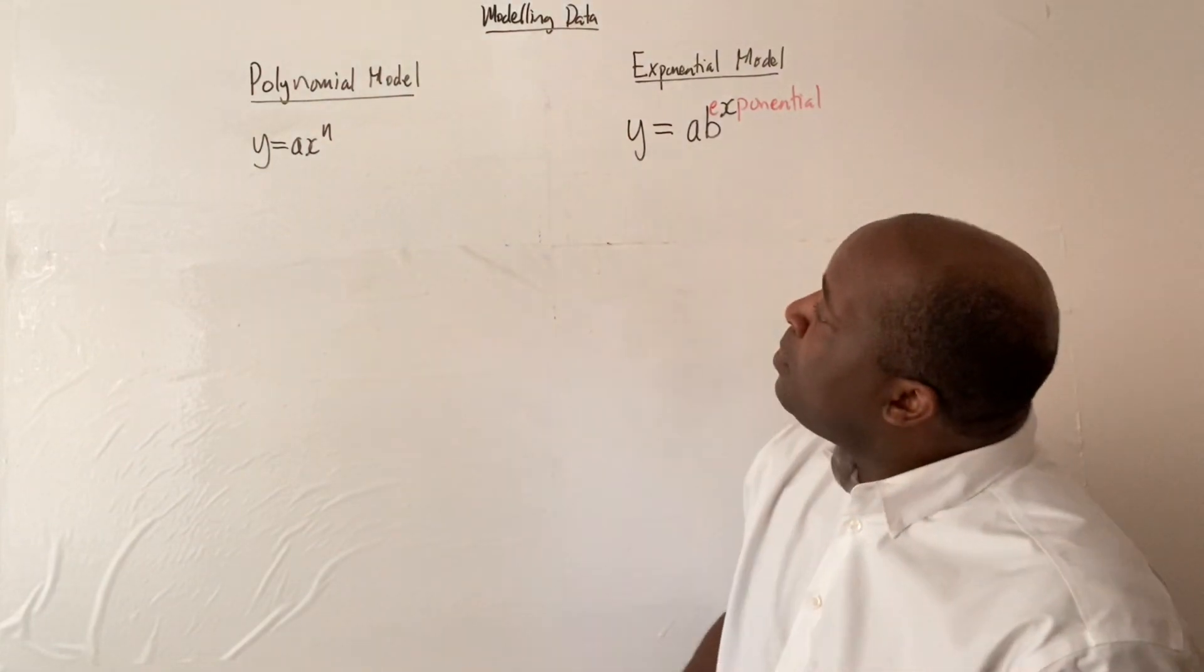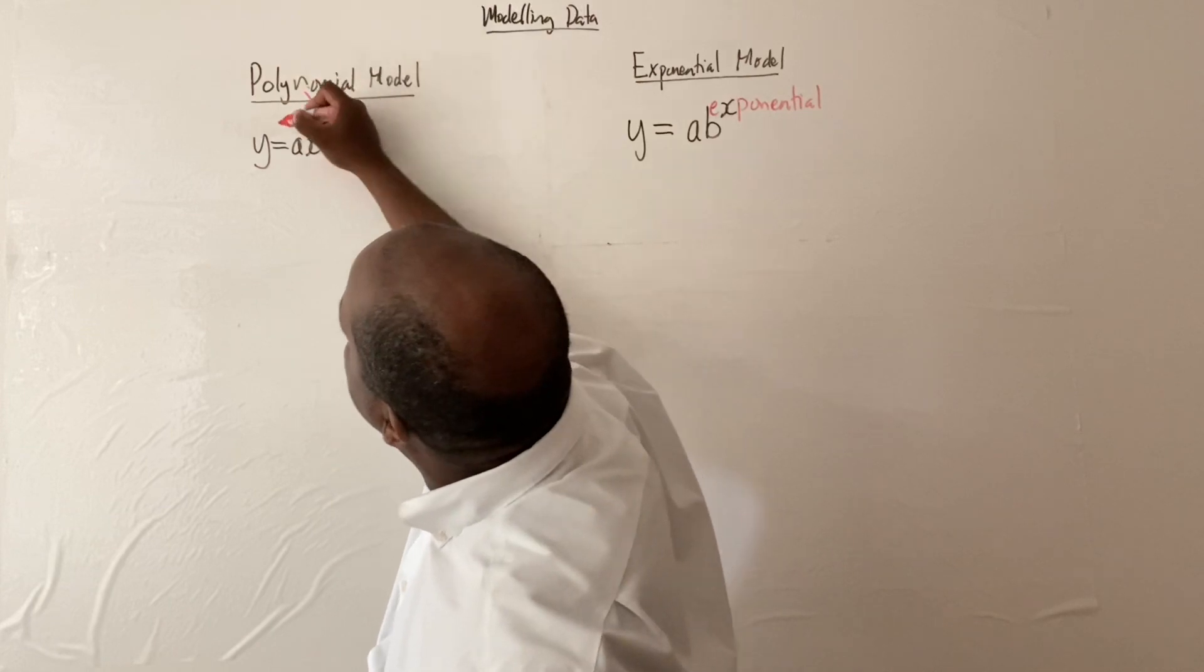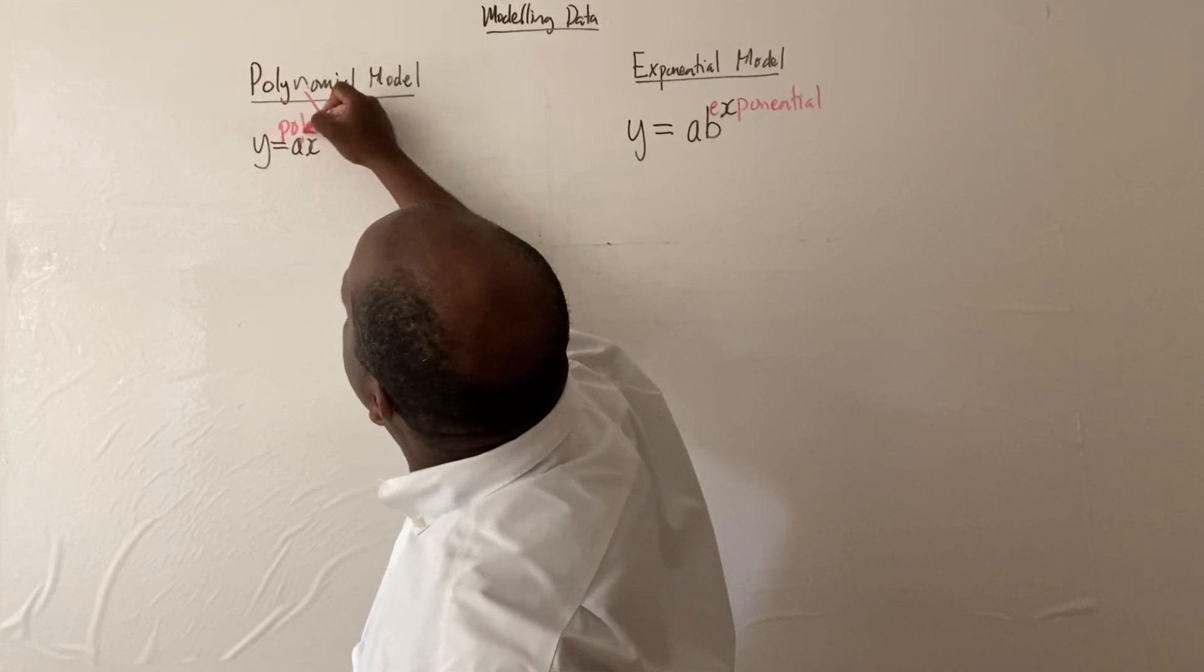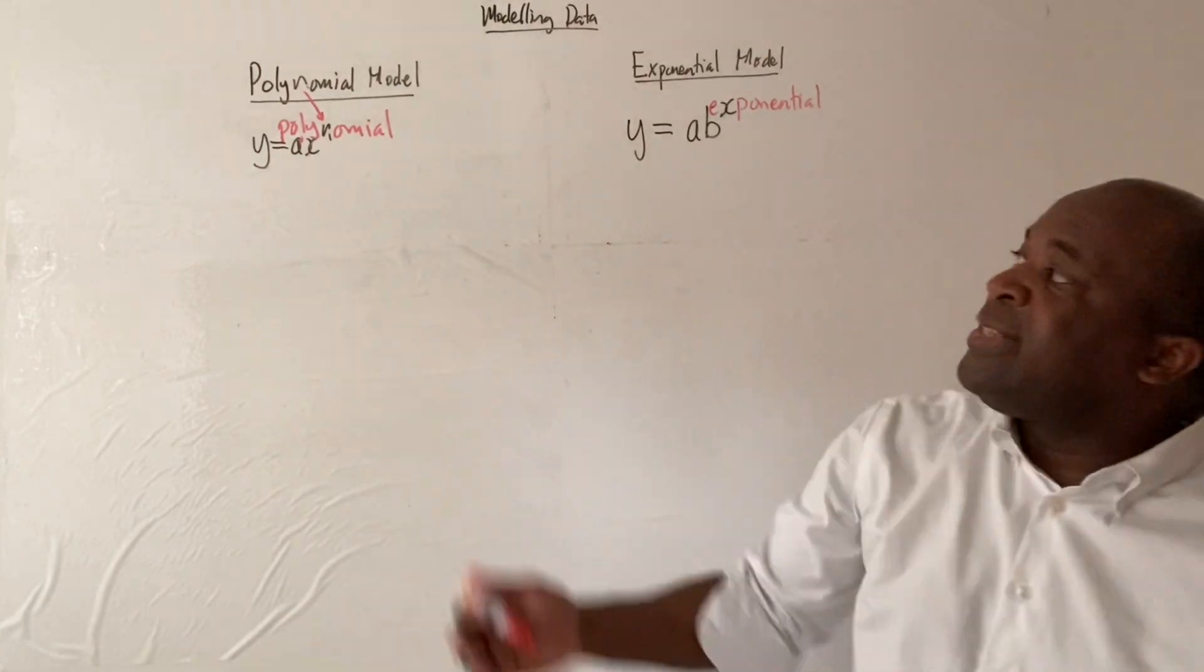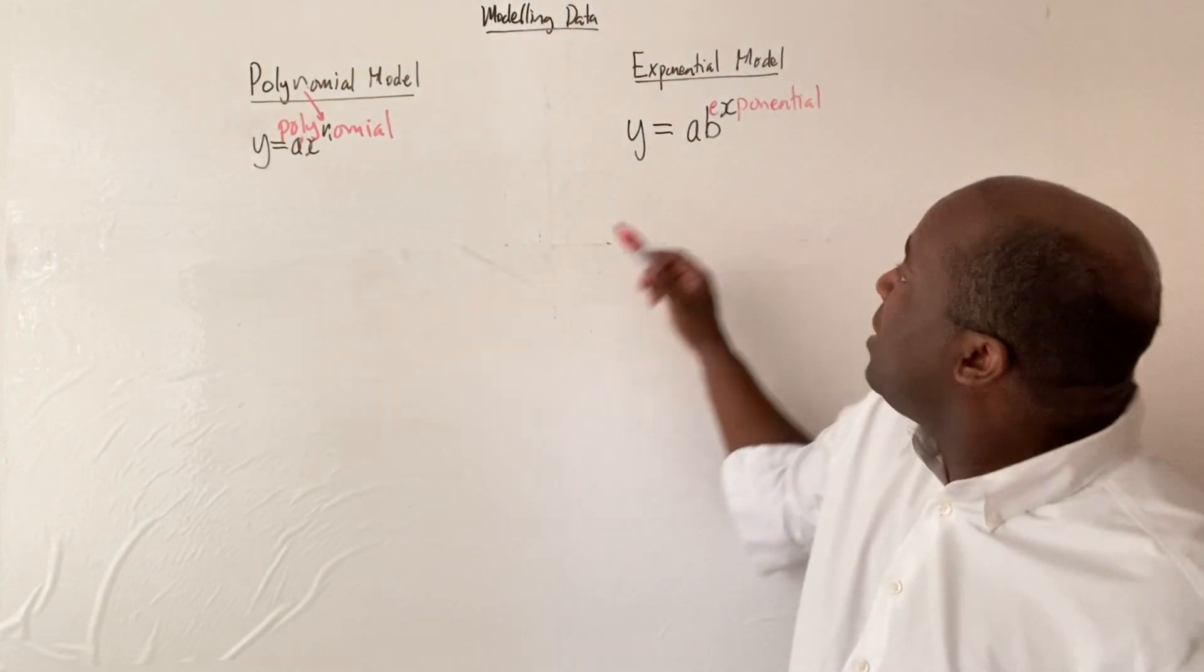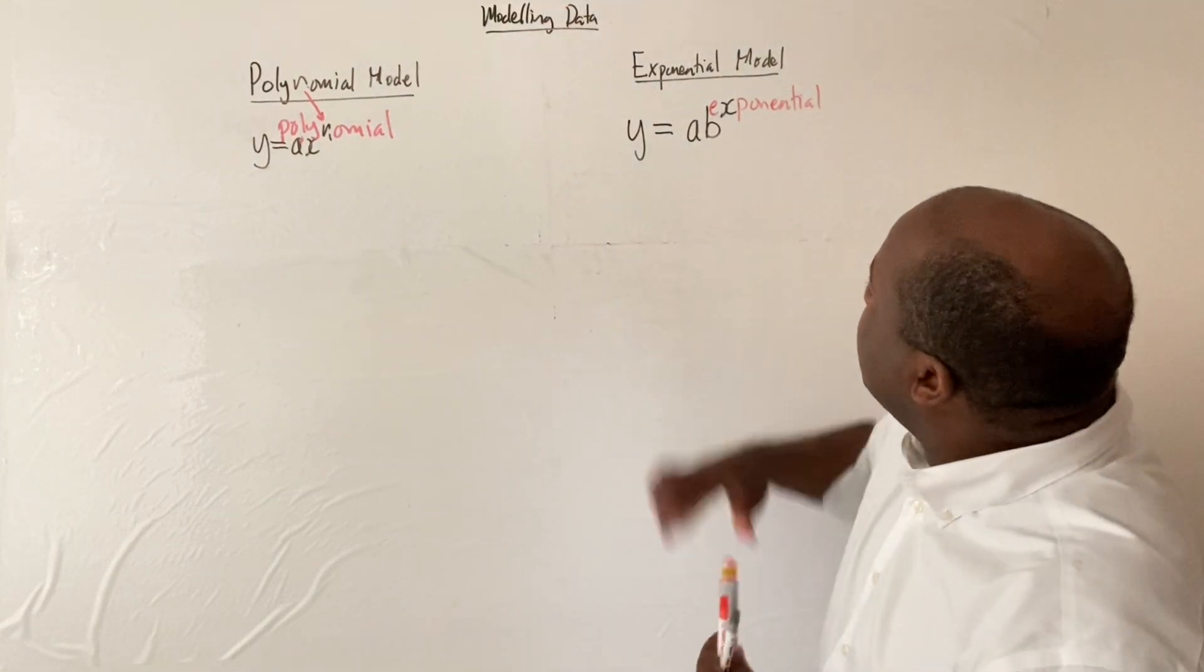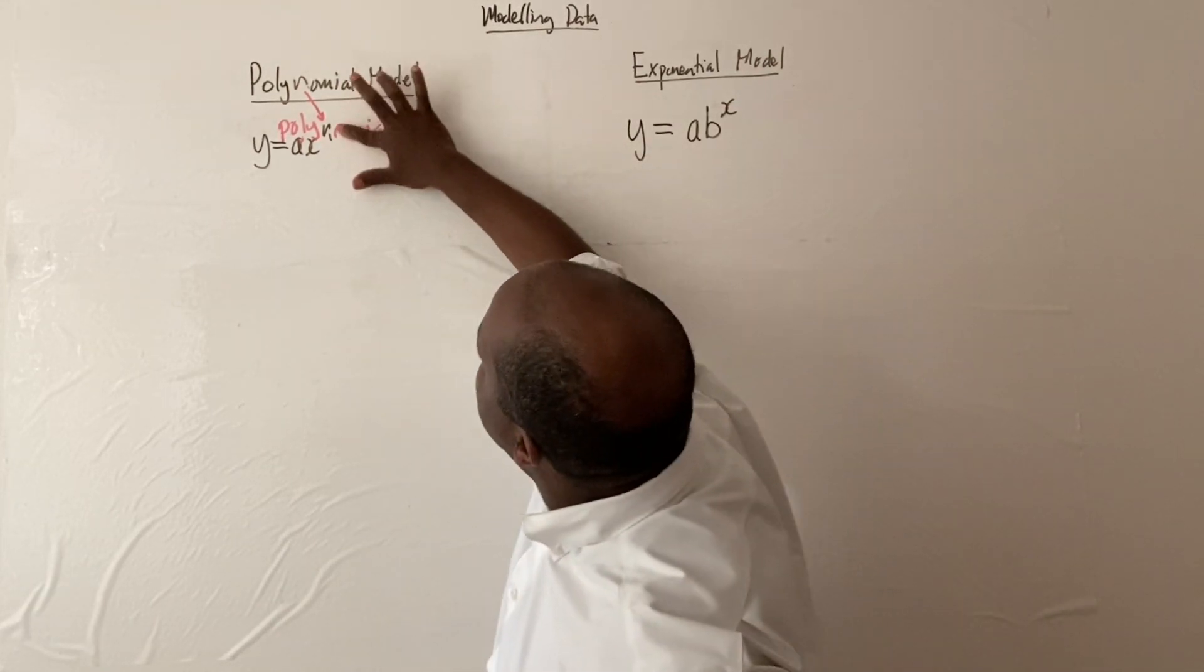And polynomial, then I think of that n, sort of matching up that n. So, polynomial, we know that the n is in the power. So if you look for the n in polynomial, ax to the n, and then the x in exponential. You might have different strategies. That works for me.